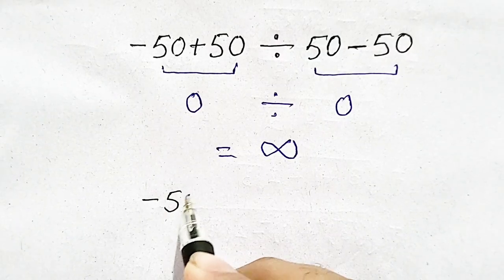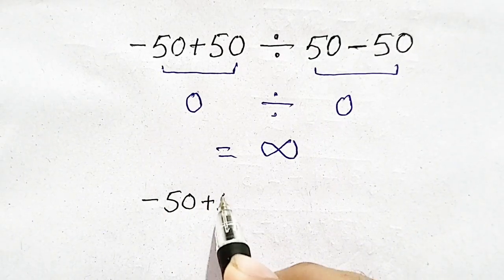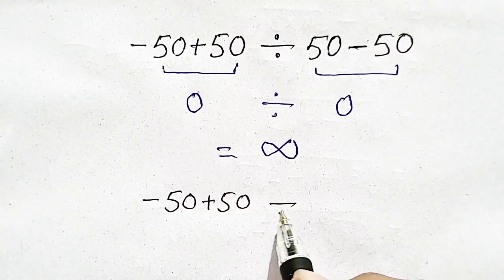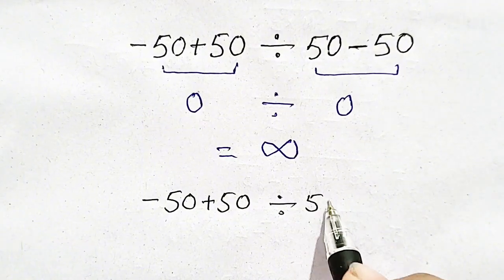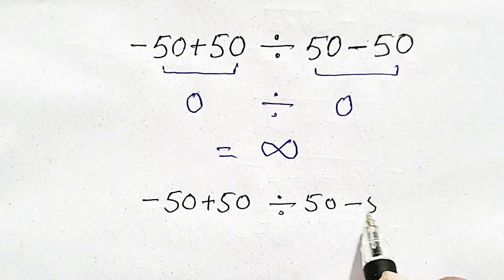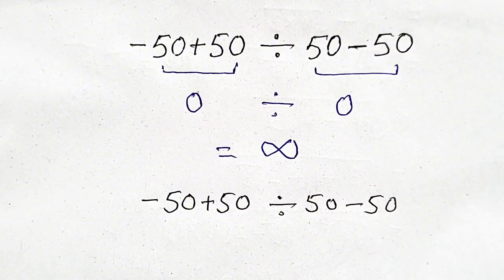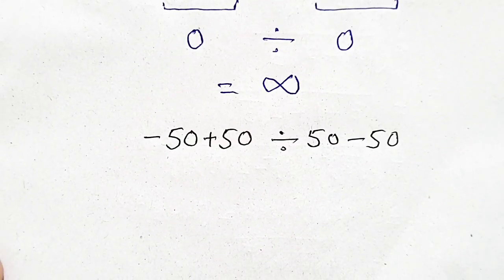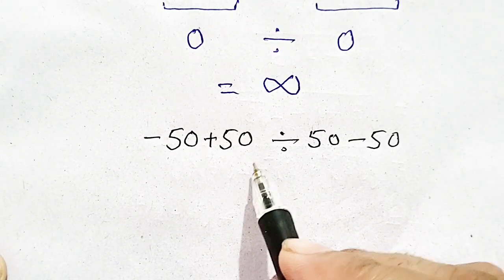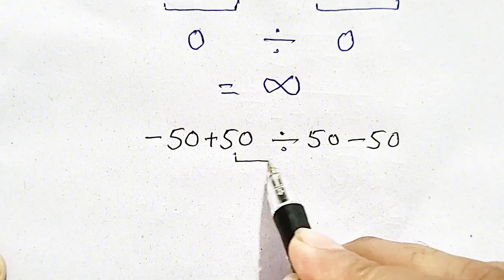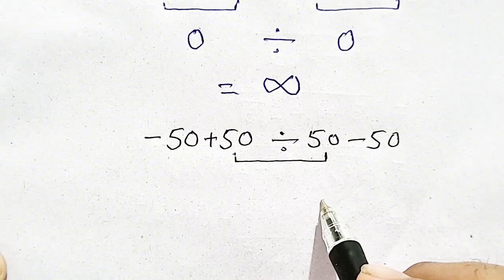The question is minus 50 plus 50 divided by 50 minus 50. Now we will follow the order of operations, which means first of all we have to solve division.